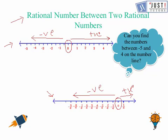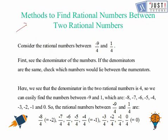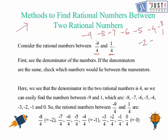Now we will learn how to find rational numbers between two numbers. Here we need to find numbers between minus 5 and 4. The first method applies when the denominators are the same. For example, what numbers lie between minus 9 and 1? They are minus 8, minus 7, minus 6, minus 5, minus 4, minus 3, minus 2, minus 1, and 0. All these rational numbers with denominator 4 lie between them. This is how we find rational numbers when the denominator is the same.